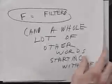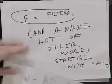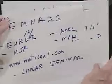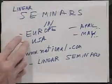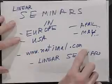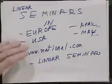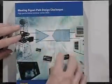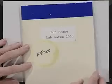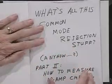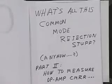F is for filters and a whole lot of other words starting with F. We're also going to be talking about what's all this signal path stuff. We're doing linear seminars in Europe in April and in the USA in May. If you want to see where and how we're doing it, go to www.national.com and find the linear seminar stuff. You'll be seeing things such as meeting signal path design challenges from National Semiconductor, and Bob Pease lab notes from 2005, including what's all this common mode rejection stuff anyhow.